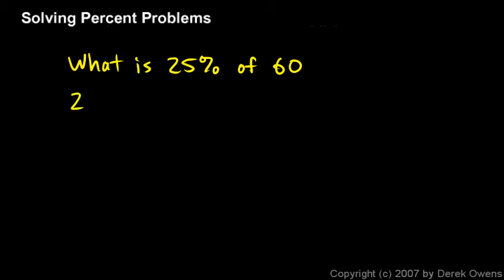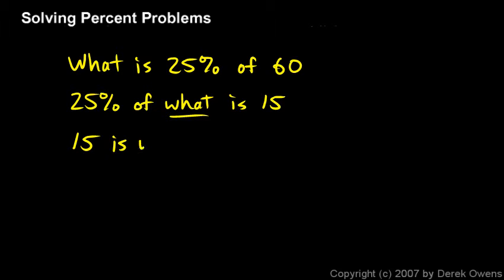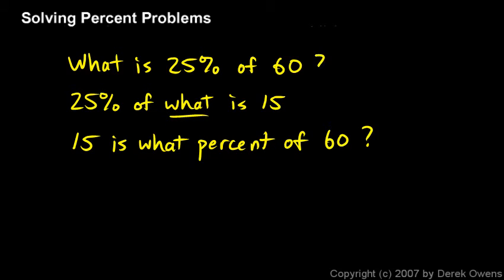Or you might be told 25% and asked: 25% of what number is 15? In that case, you're trying to find the total. Or you might be asked: 15 is what percent of 60? There are three different types of percent problems — you could be asked for one number, the other number, or the percentage. Keeping that straight is the tricky part, and fortunately there are only three things to keep straight.